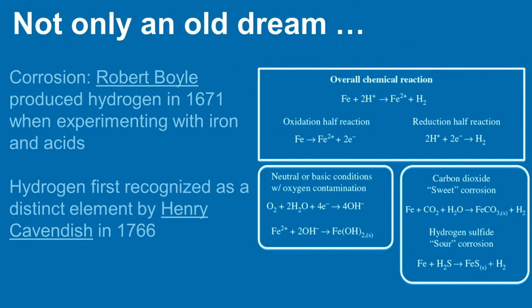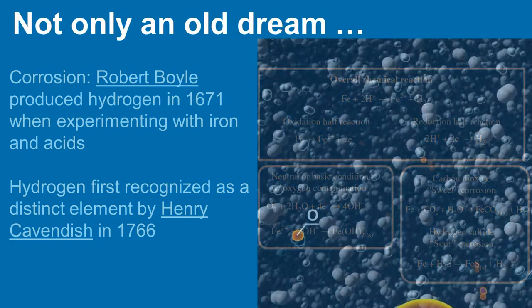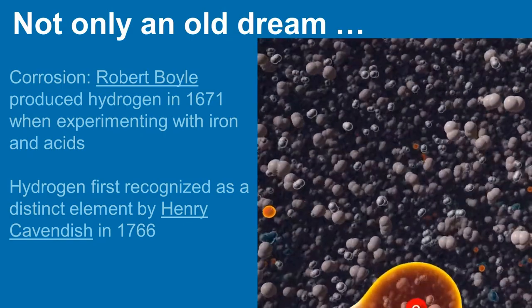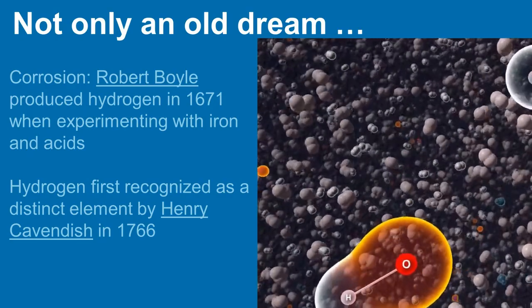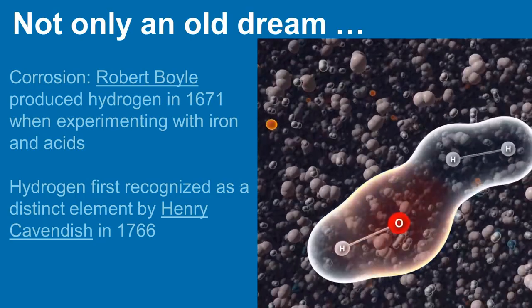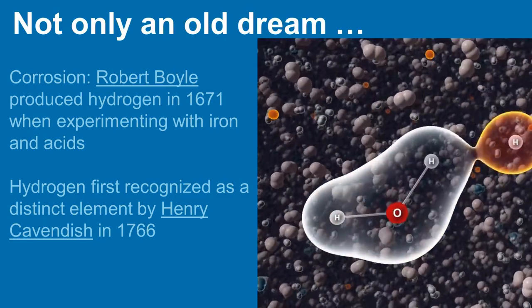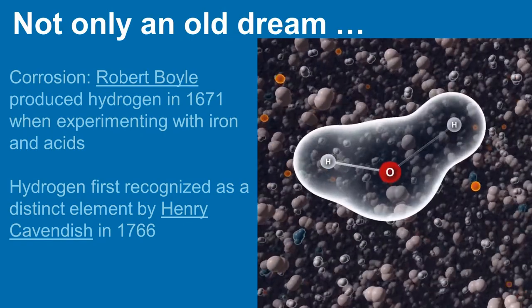Real history is sometimes even more stunning than fiction told in novels. Early records suggest that Robert Boyle produced hydrogen already as early as 1671 in a series of corrosion tests when experimenting with iron and acids. Finally, in the year 1766, Henry Cavendish was the first to recognize hydrogen as a distinct element.